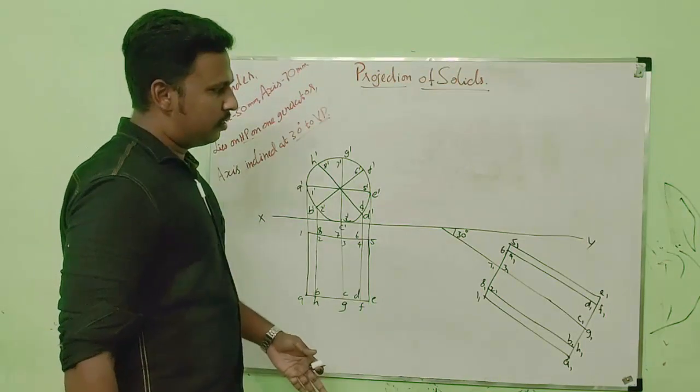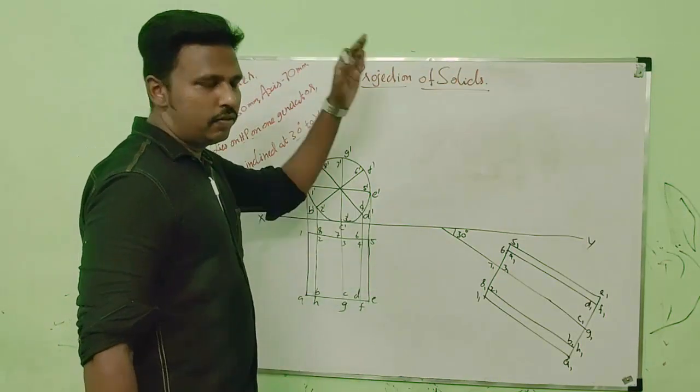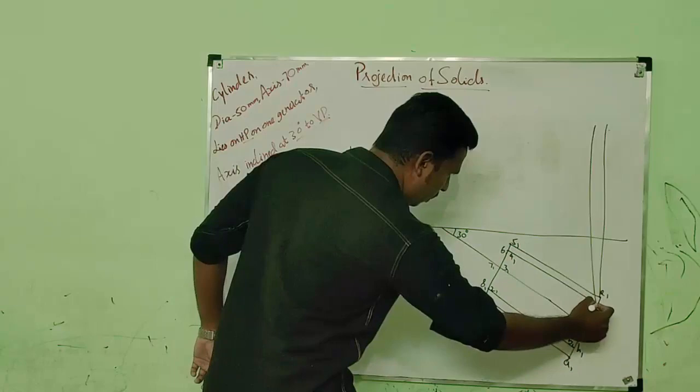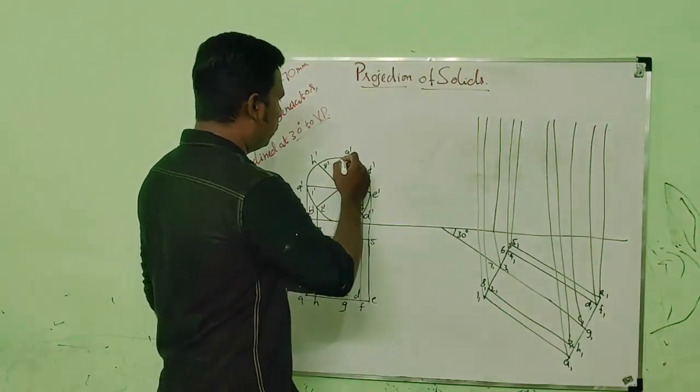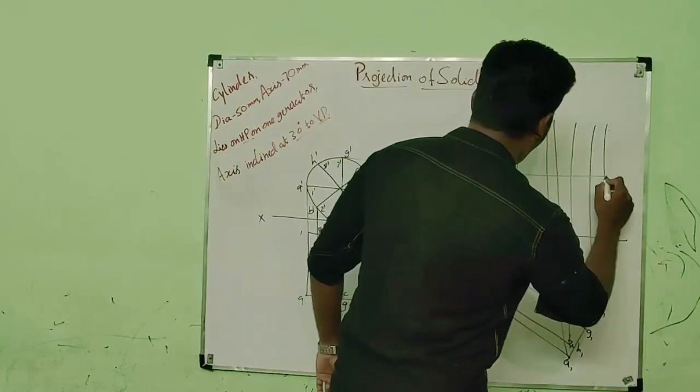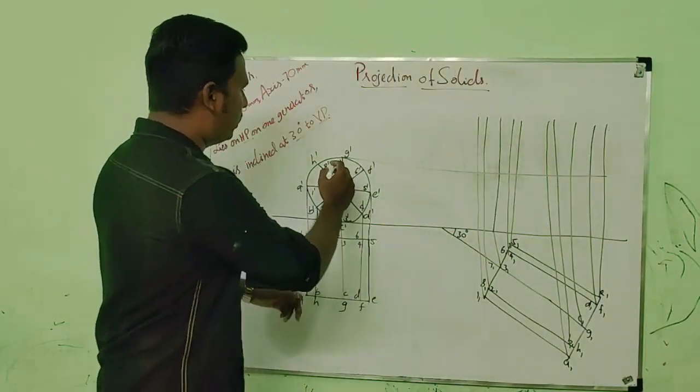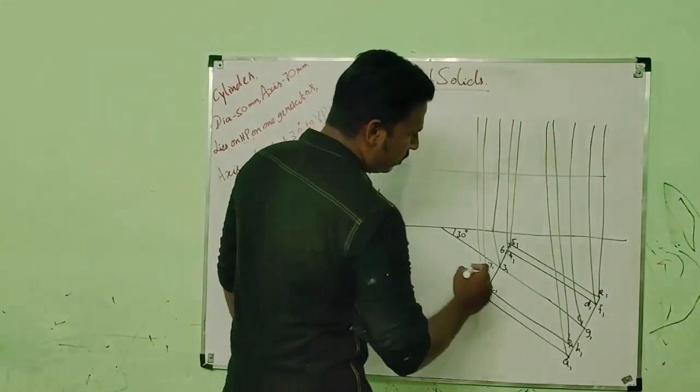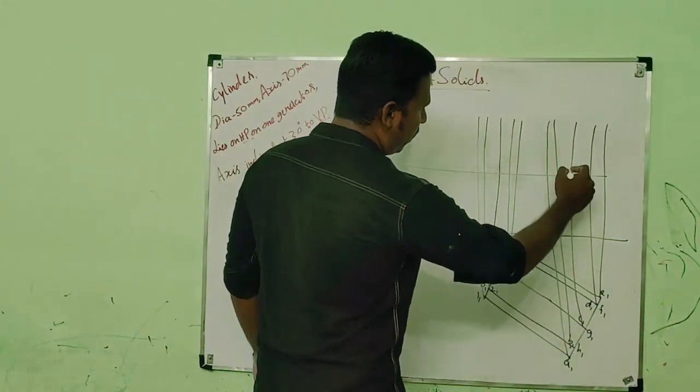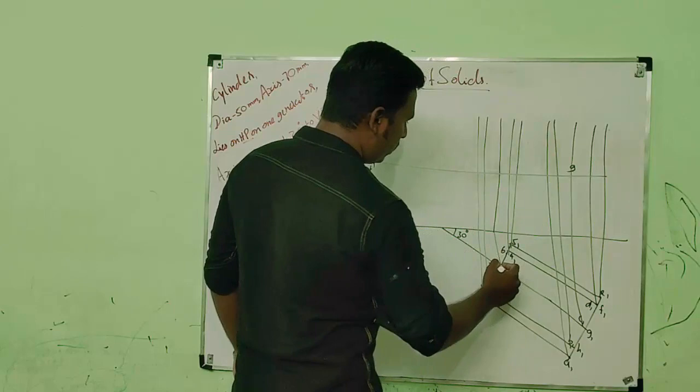And then let us just project all the points from the front view. Then project the points from this front view. And this point will correspond to the points G and 7. G is here and 7 is here.